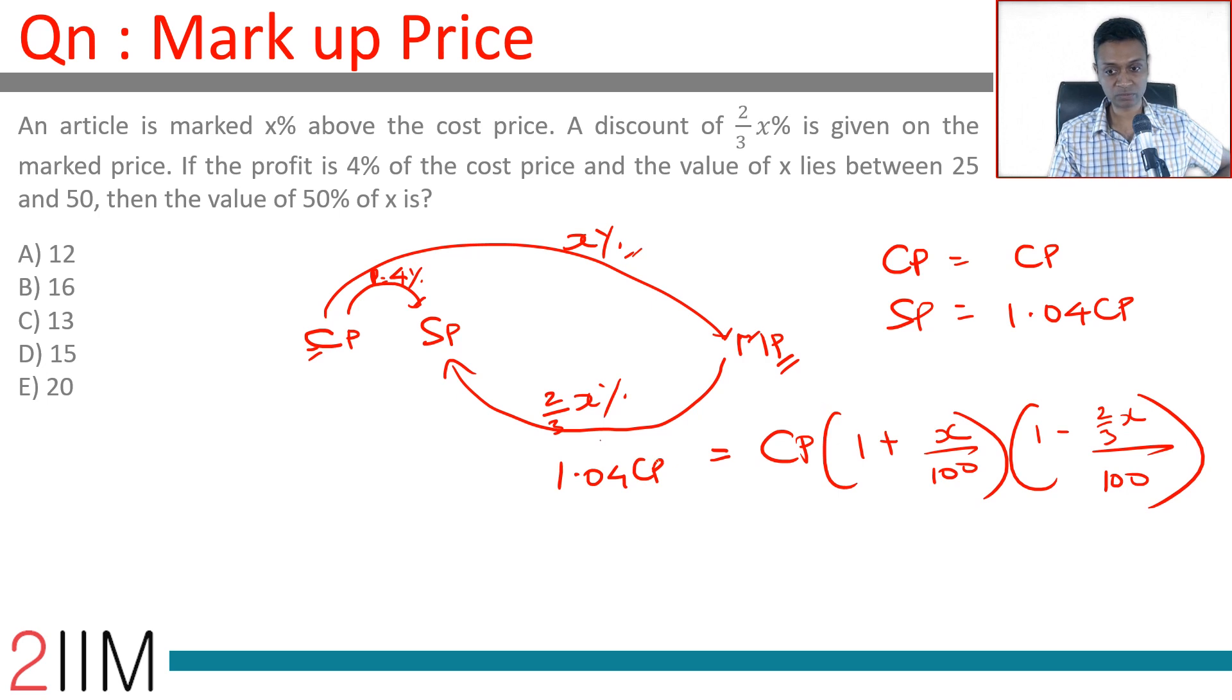The cost price gets cancelled on both sides. This is 100 plus x by 100, this is 1 minus x by 150. Two-thirds of x is 2 by 300, which is 1 by 150.